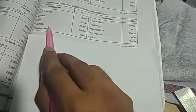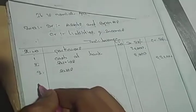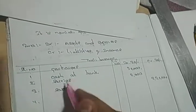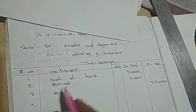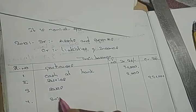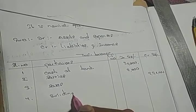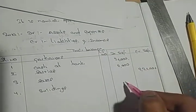Next, buildings: asset. Asset rule: debit. Buildings: 20,000.